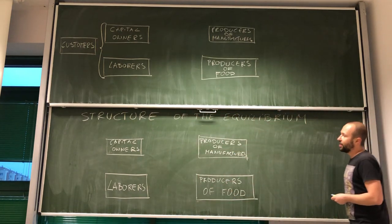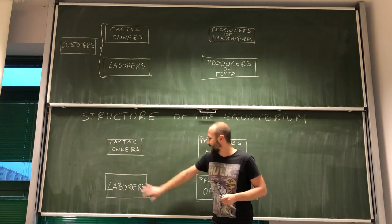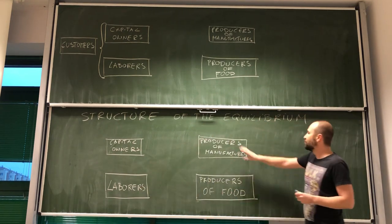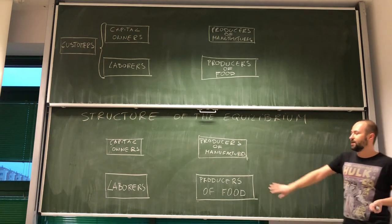In this economy we can distinguish four different types of agents. Those agents are capital owners, laborers, producers of manufacturers and producers of food.